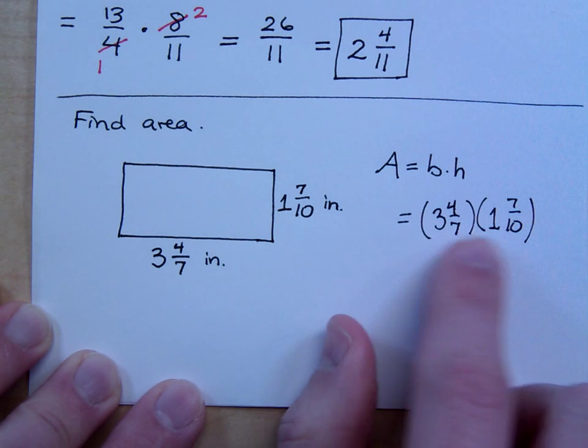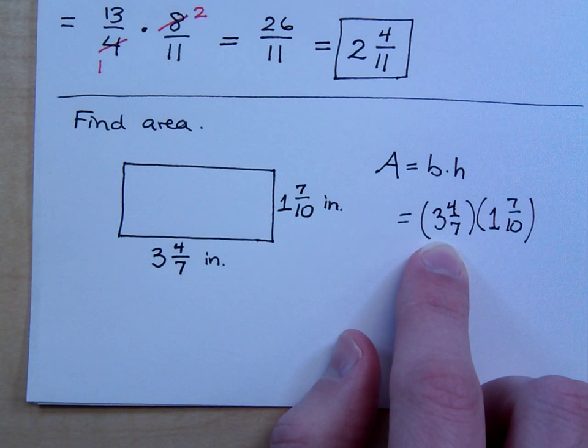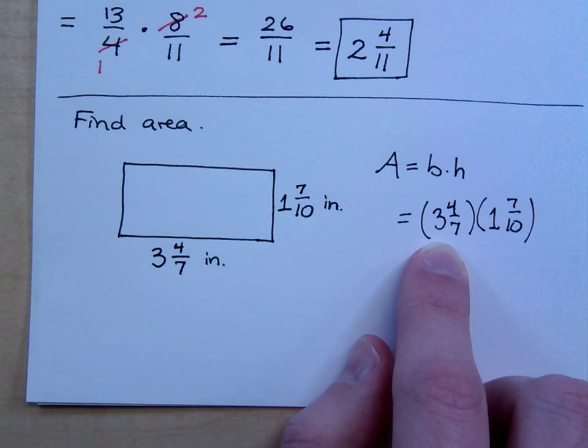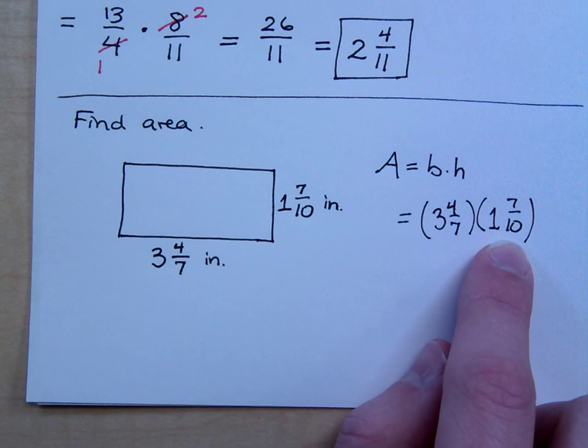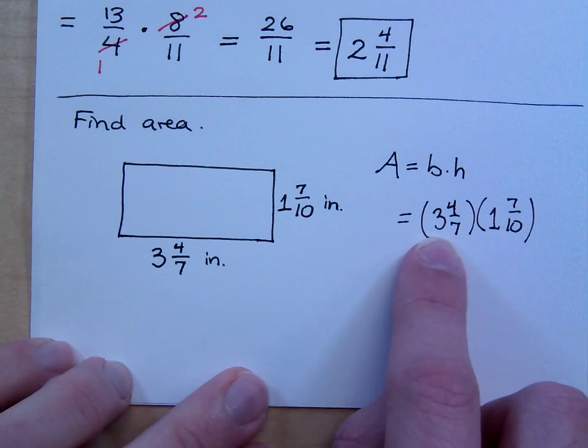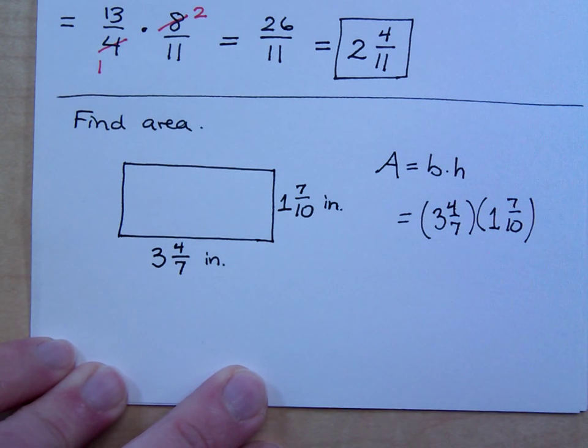If I had to round these guys, if I had to estimate 3 and 4 sevenths, would that round up or down? It would actually round up, because half of 7 is 3.5. So this guy would round up to about 4. What about this guy? Would he round up or down? He would round up. So if I were rounding, this guy rounds up, this guy rounds up too, so 4 times 2 is 8. Now, if I round up on both of those, that means that my estimation is going to be higher than the actual answer. I know that. So let's figure this out.